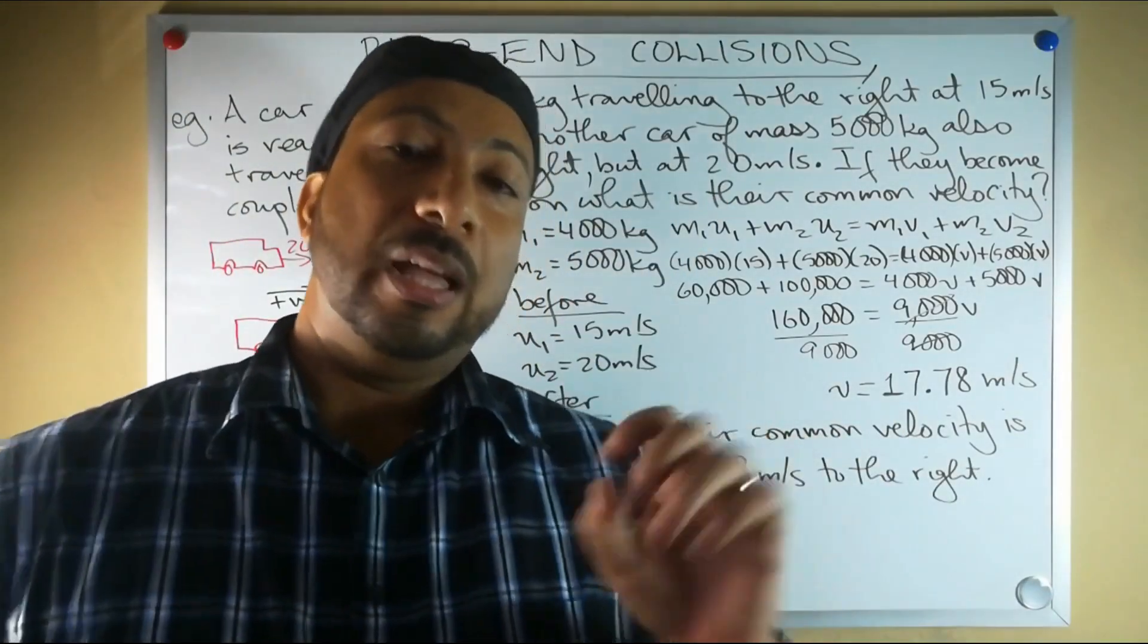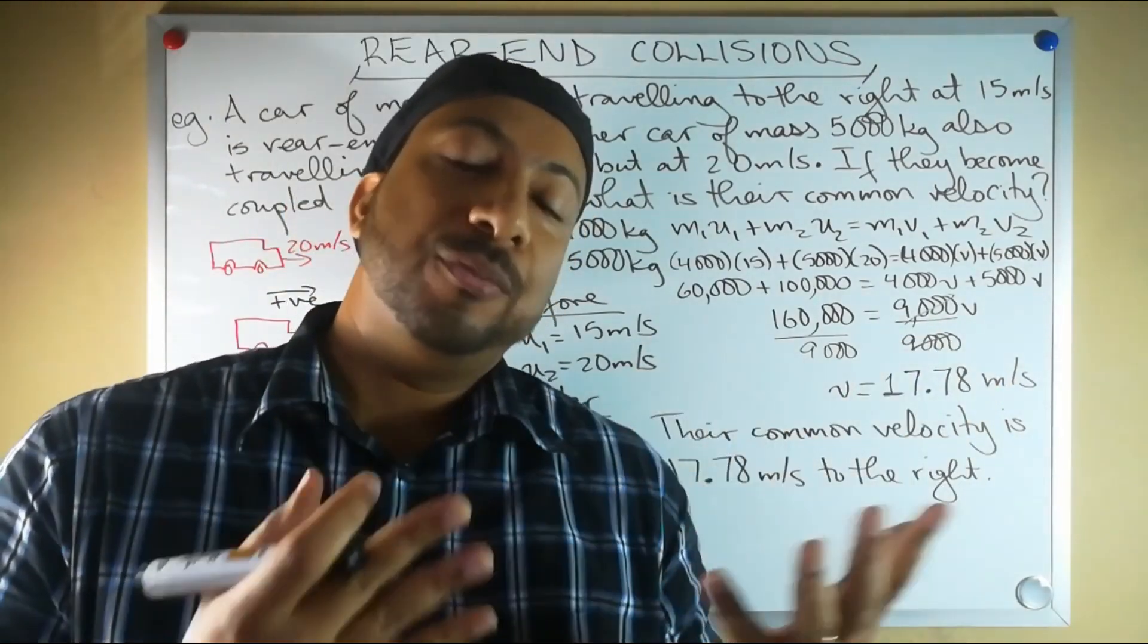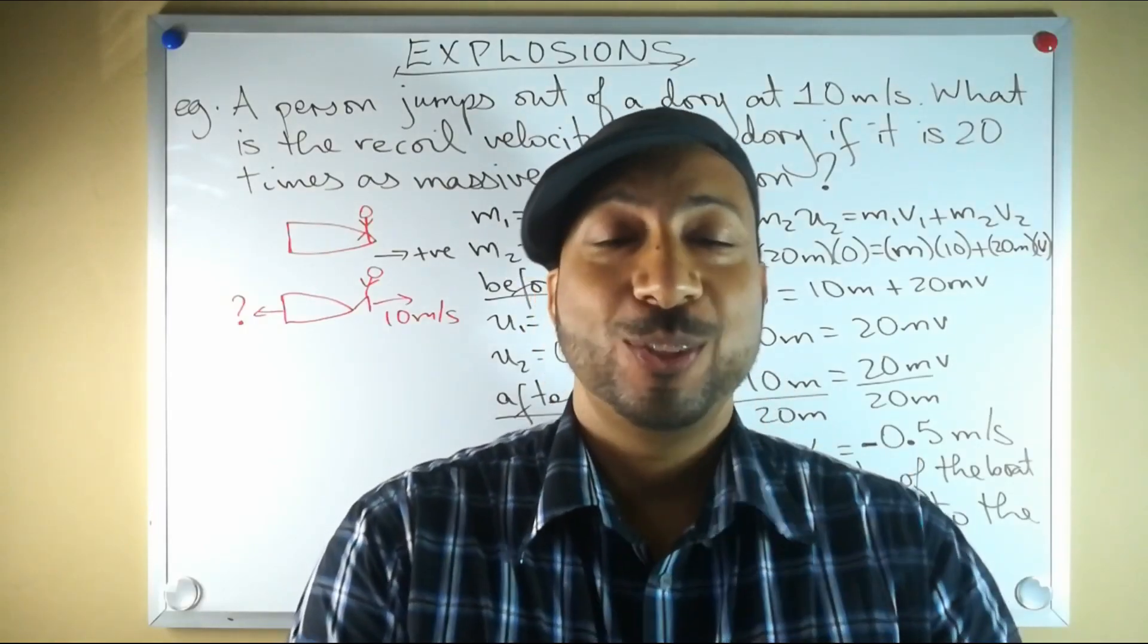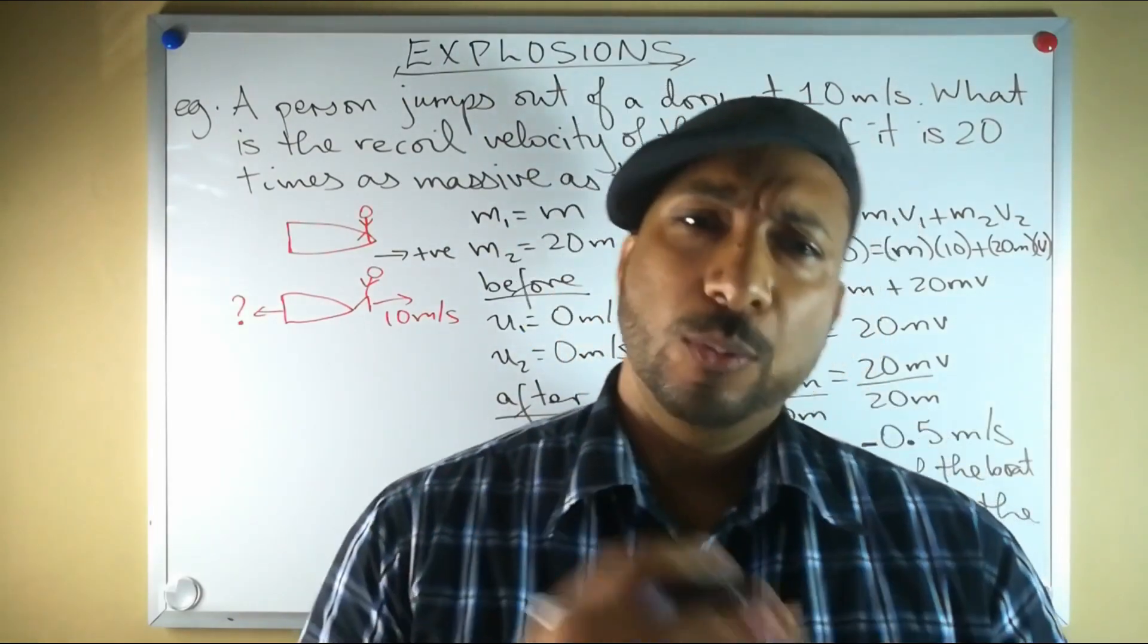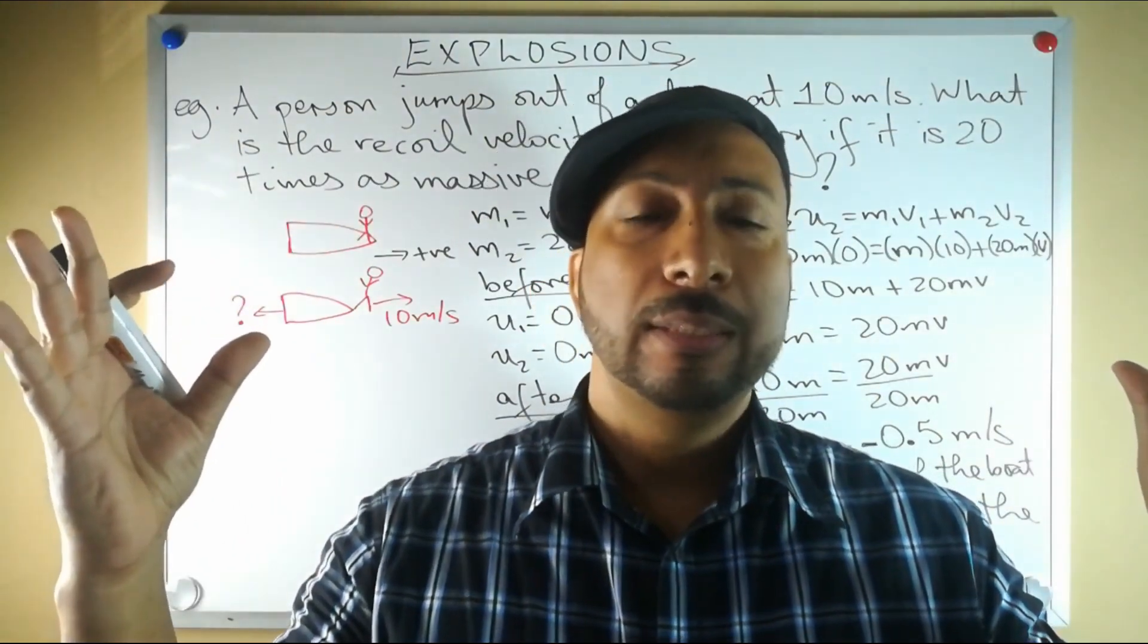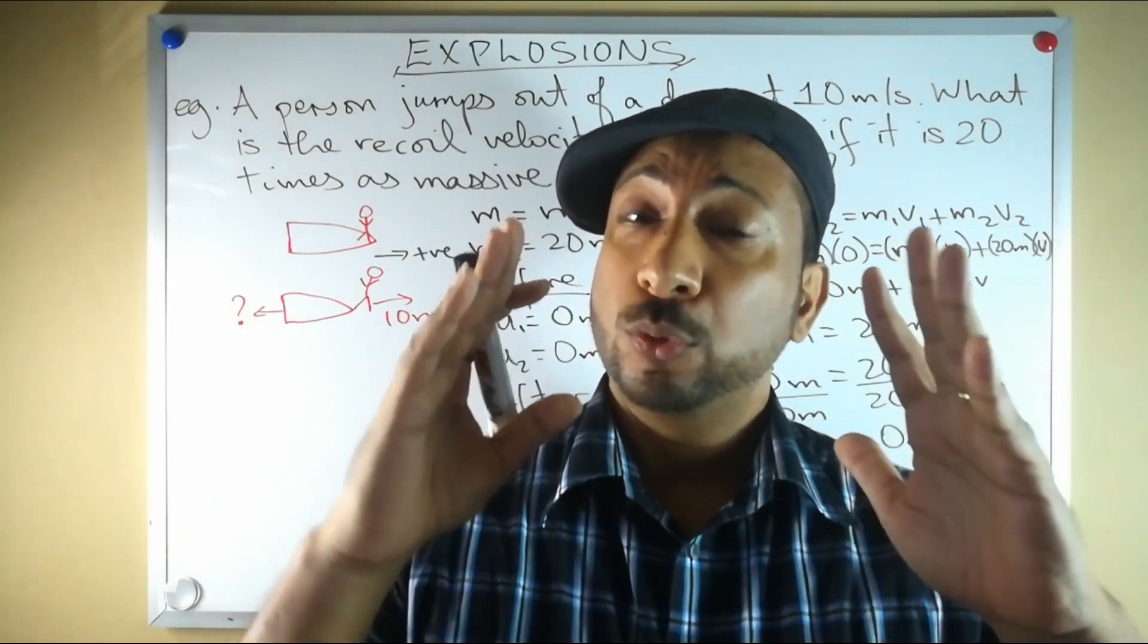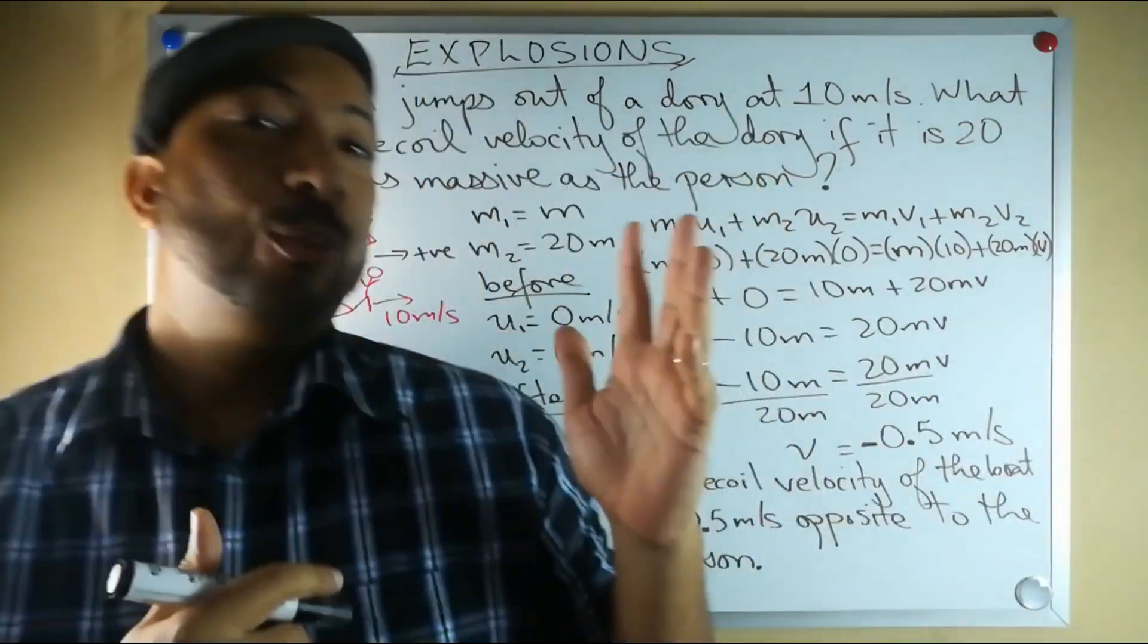Let's now look at an example of an explosion. When I say explosion, different kinds of things can mean an explosion - it's not literally a bomb exploding, but we'll see. Now for this example of explosions, it's not really an explosion where things fly apart at all angles and directions, but it is still considered an explosion because two things were initially together and then they went apart from each other.